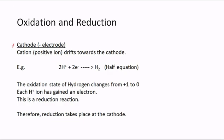At the cathode, the cathode is the negative electrode, and the cations or positive ions drift towards it. For example, we have H+ ions: 2H+ plus 2 electrons produces H2. The oxidation state of hydrogen here is +1, and in H2 it is 0. We are moving from +1 to 0 — that is a decrease in oxidation number, which is reduction. Each hydrogen ion has gained an electron, so this is a reduction reaction. Therefore, reduction takes place at the cathode during electrolysis.